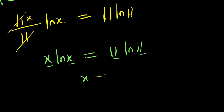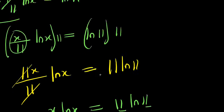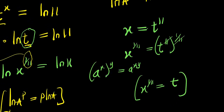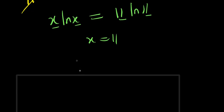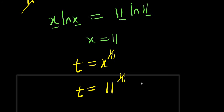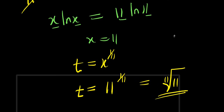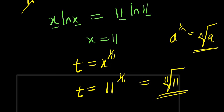From x times ln x equals 11 times ln 11, we can say that x equals 11. Now to solve for t, we have t equals x power 1 over 11. Substituting x equals 11, t equals 11 power 1 over 11, which is the same as the 11th root of 11, using the identity a power 1 over n equals the n-th root of a. That is the first method of solving this exponential problem.